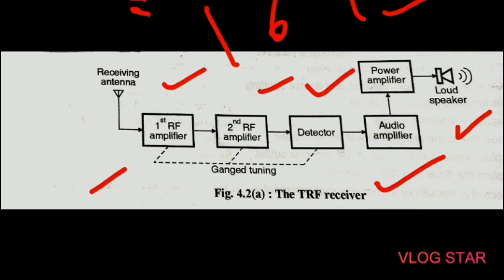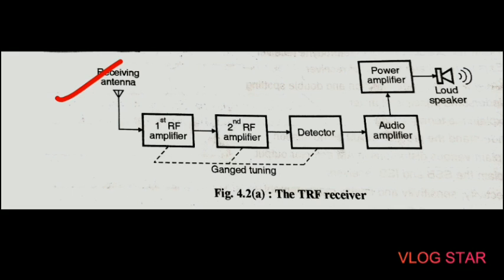Due to the electromagnetic waves passing over the receiving antenna, a voltage is induced in it. This induced signal consists of signals from various transmitting stations, and all these signals are received through the receiving antenna. The RF amplifiers are tuned simultaneously to select and amplify the desired signal and to reject all other signals. Tuning means adjusting the resonant frequency of the tuned circuit to be equal to the desired frequency. Gang tuning means the simultaneous tuning of tuned circuits in all RF amplifier stages using the gang capacitor.